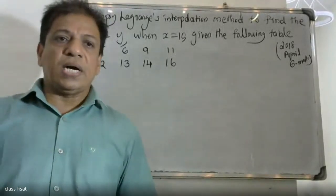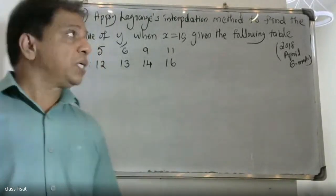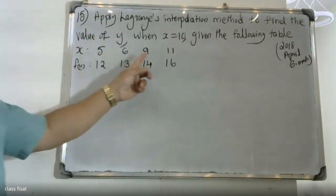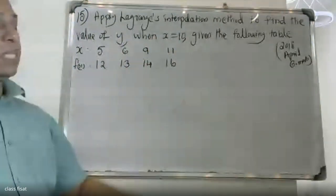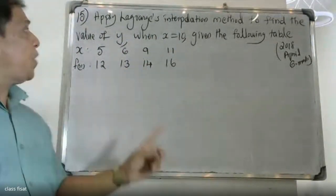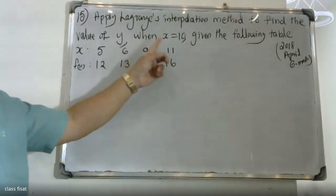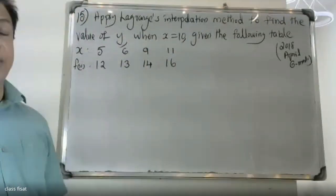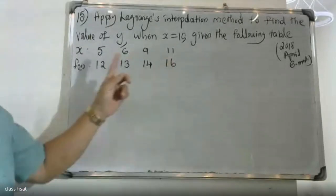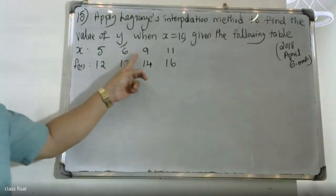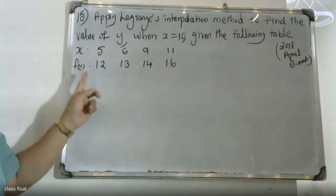Good morning students. The question is applying Lagrange's interpolation method to find the value of y when x is equal to 10, given the following table: x values are 5, 6, 9, 11.